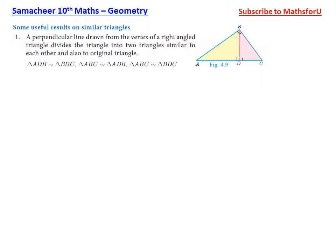A perpendicular line drawn from the vertex of a right-angled triangle to its hypotenuse divides the triangle into two triangles. These two triangles — ABD and BDC — are similar to each other and also to the original triangle ABC.